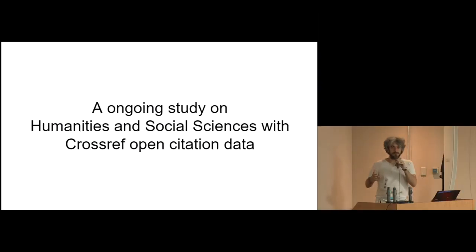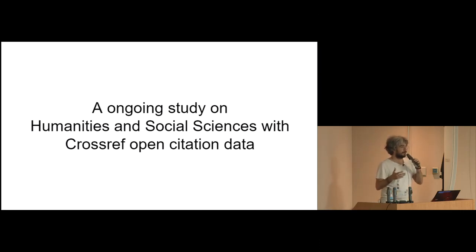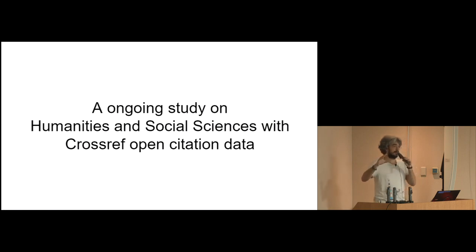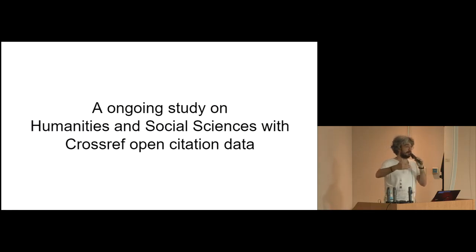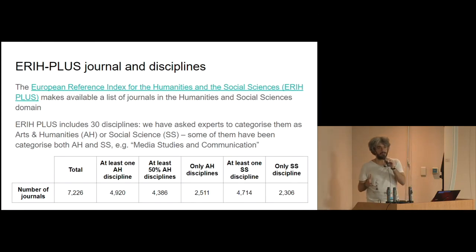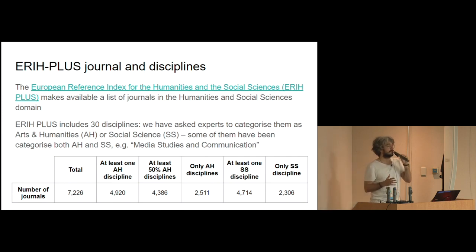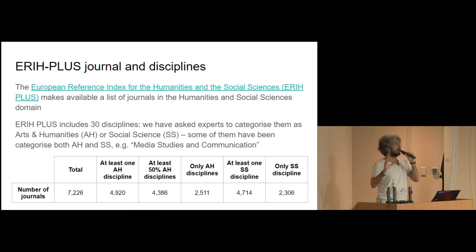The question that usually comes up is what can be done with all this data. I want to take 10 minutes to describe a research I'm doing with colleagues that is entirely based on open citation data available in Crossref. Our main goal is to try to understand if there is an automatic strategy for defining what humanities as a research area is.